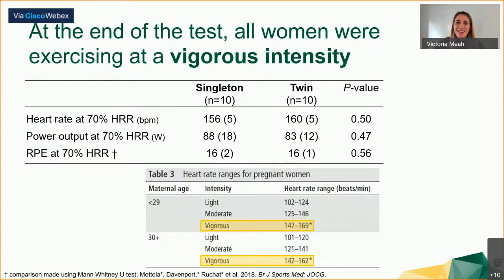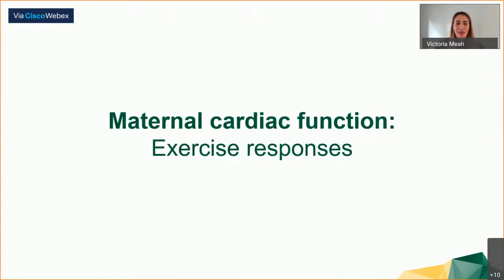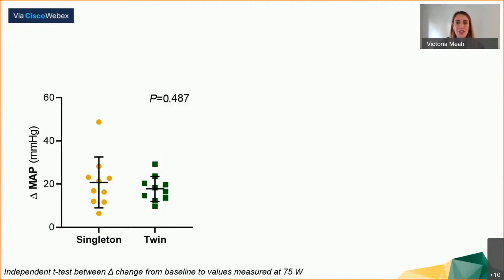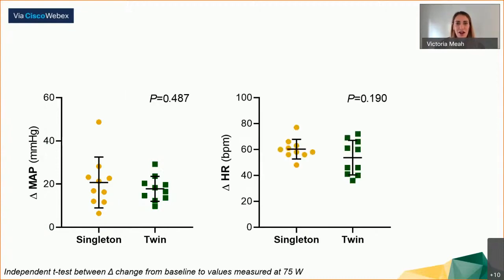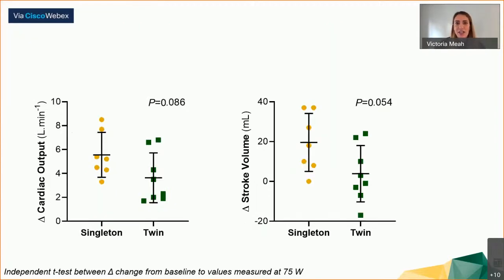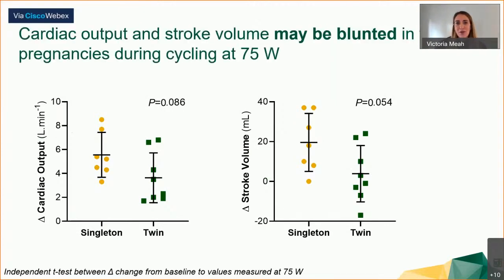In terms of exercise responses, the maternal heart rate and blood pressure responses were not different between singletons and twins in response to cycling. However, cardiac output and stroke volume may be blunted in twin pregnancies when cycling at 75 watts, which could indicate a lower cardiovascular reserve in this population.